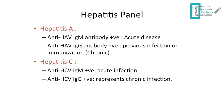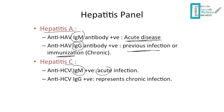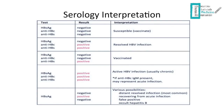Now let's look at serology interpretation. For hepatitis A: IgM positive means acute infection; IgG positive means the patient is immunized due to previous infection or vaccination. For hepatitis C: IgM positive indicates acute infection; IgG positive indicates chronic infection. The same logic applies to hepatitis B. For hepatitis B specifically, active infection is indicated when hepatitis B surface antigen, anti-hepatitis B core, and anti-hepatitis B surface are all positive. To determine if it's acute or chronic, check whether the anti-hepatitis B core antibody is IgM (acute) or IgG (chronic).